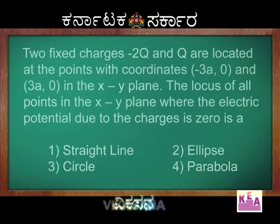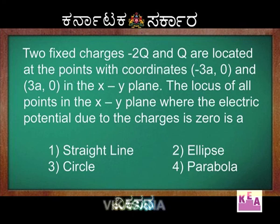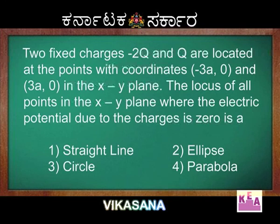Let me now go to the second question. Two fixed charges −2q and q are located at the points with coordinates (−3a, 0) and (3a, 0) in the xy plane. The locus of all the points in the xy plane where the electric potential due to the charges is 0 is: (1) straight line, (2) ellipse, (3) circle, (4) parabola.